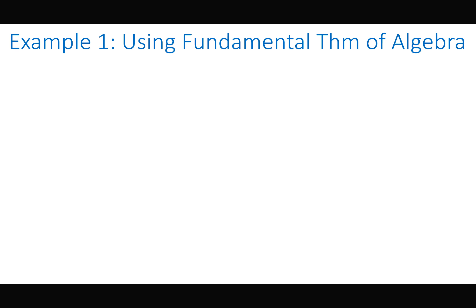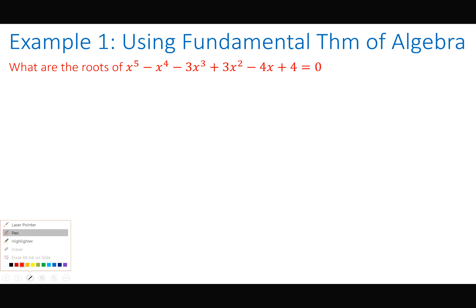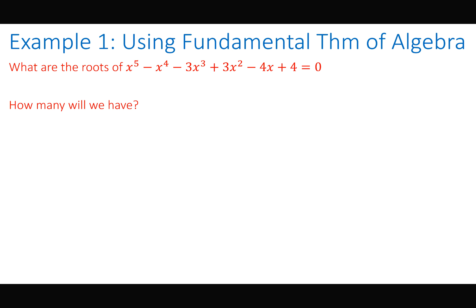So let's actually use the Fundamental Theorem of Algebra. The problem asks: what are the roots of x to the 5th minus x to the 4th minus 3x cubed plus 3x squared minus 4x plus 4? We've got a lot going on. How many zeros will we have? Five — we know there are going to be five zeros.